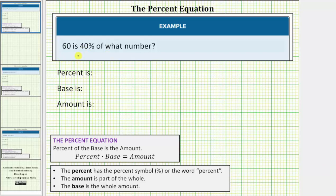We want to answer the question, 60 is 40% of what number? We'll be answering this question using the percent equation, which is percent times base equals amount, where the percent has a percent symbol. The amount is part of the whole, and the base is the whole amount.